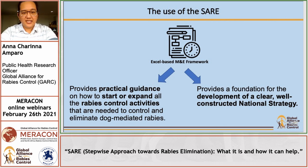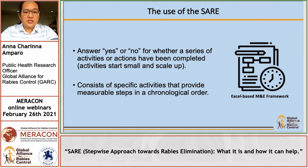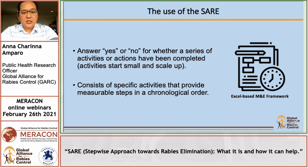It provides practical guidance on how to start or expand rabies control activities needed to control and eliminate dog-mediated rabies. It also provides a foundation for the development of a clear, well-constructed national strategy. It is simple — it consists of a list of questions answerable by yes or no, for whether certain activities or actions have been completed. These activities provide measurable steps in a chronological order.